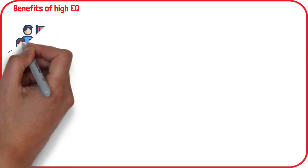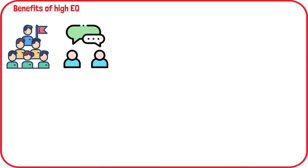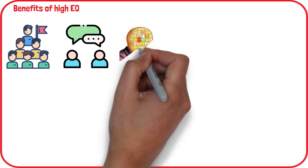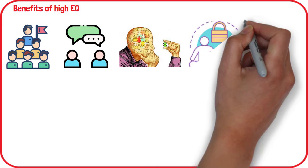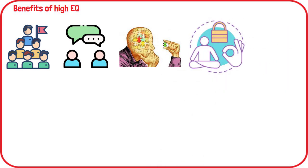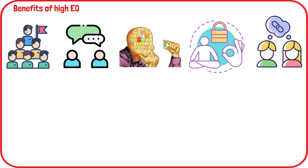Having strong emotional intelligence skills can significantly benefit various areas of life: Leadership enhances effectiveness in leading and motivating others. Communication improves interactions by understanding others' emotions. Self-knowledge increases self-awareness and understanding. Self-control enhances the ability to manage emotions and stress. And relationships strengthens interpersonal connections and social support networks.